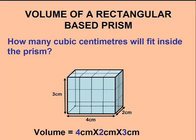We could come up with this number easier if we simply multiplied the numbers together. 4 cm by 2 cm by 3 cm, giving us the same answer of 24 cubic centimeters.